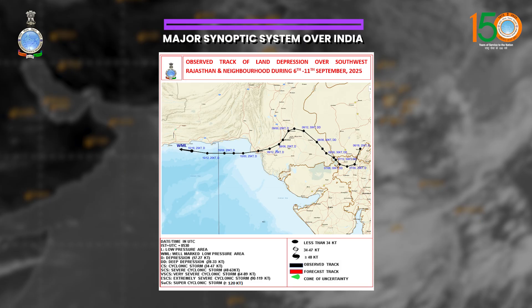The total life cycle of this depression, as depicted in this image, is from 6th September to 11th September. You can see its track: from south Rajasthan it traversed over north Gujarat, then south Pakistan, then to northeast Arabian Sea, and then to northwest Arabian Sea, where it weakened into a well-marked low pressure area this morning on 11th of September.